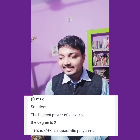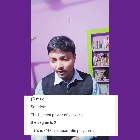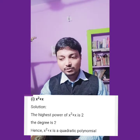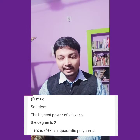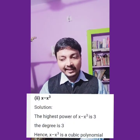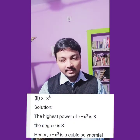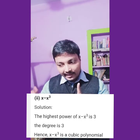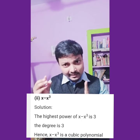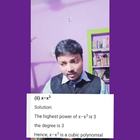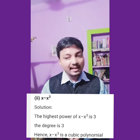First one is x square plus x. The powers are 2 and 1; the highest is 2. Degree 2 means quadratic. Second one is x minus x cubed. The powers are 1 and 3; the highest power is 3. Degree 3 means cubic.